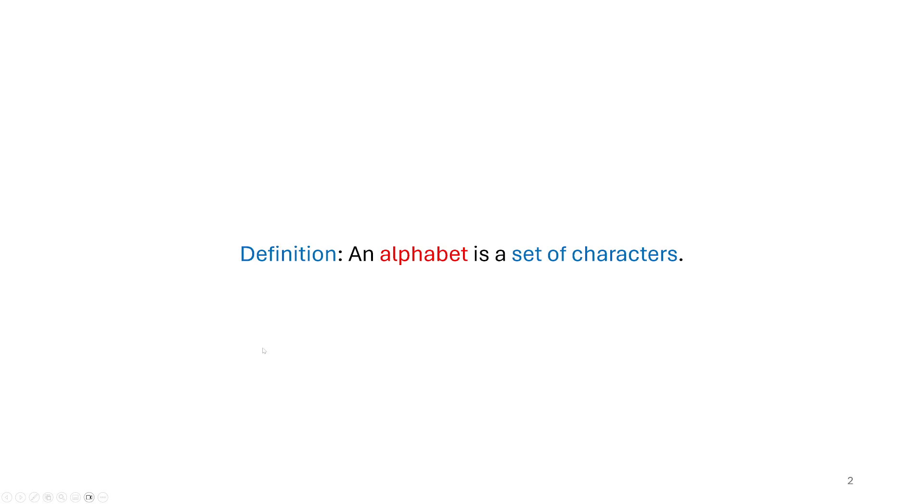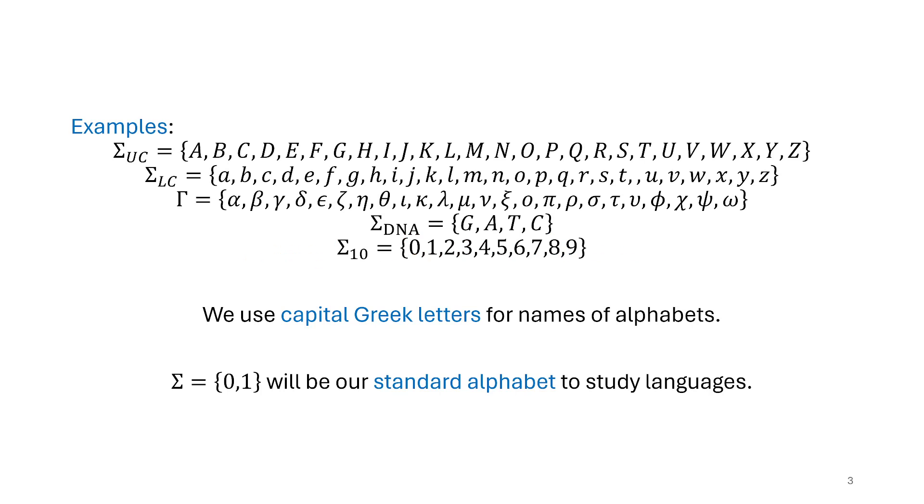So we'll start with the idea of an alphabet as just being a set of characters. There's not really much that differentiates an alphabet from any other set, other than that we specify that the elements of the set are characters, whatever that might be. We are pretty agnostic about what kind of characters you might be interested in using. So here are some example alphabets, some that you might be familiar with.